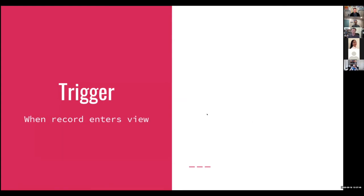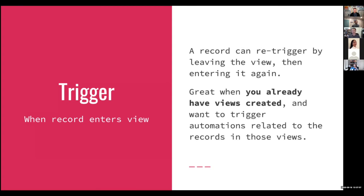The next trigger is 'when a record enters a view' — the second of the two that were first available during the early beta phase. This could be really useful because it can also trigger when a record re-enters a view. So it's not just a one-time deal like some other triggering systems. If a record enters a view because of some change you made, then you change something else that leads that record out of the view, and later it comes back in — it will re-trigger a second time, or a third time, or whatever happens to be.